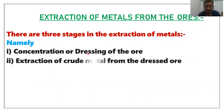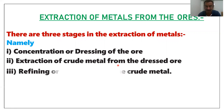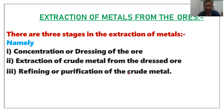The second stage is extraction of crude metal from the dressed ores. The third stage is purification or refining of the crude metal. So the three stages are: concentration or dressing of the ores, extraction of crude metal from the dressed ores, and purification or refining.